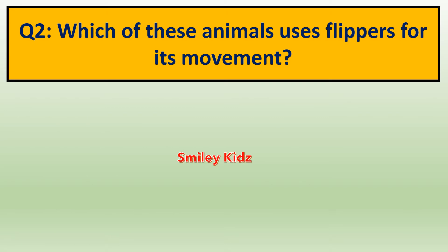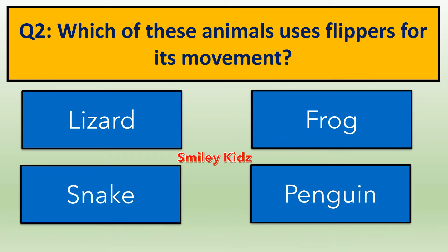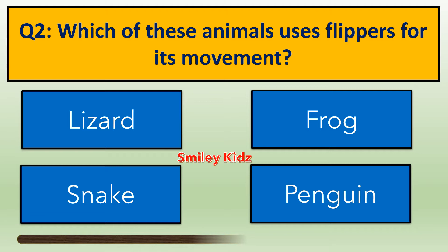Question number 2. Which of these animals uses flippers for its movement? Options are: A. Lizard, B. Frog, C. Snake, D. Penguin. Your time starts now. The right answer is Penguin. Penguin uses flippers for its movement.